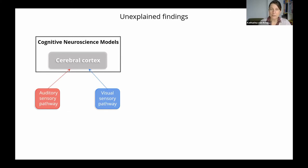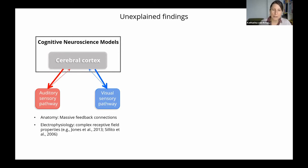But this view leaves several findings unexplained. So we know for a long time that there are massive feedback connections from the cerebral cortex to the sensory pathway nuclei, and we know that these sensory pathway nuclei have complex receptive field properties that can change over time. So why should such a system not be used to analyze speech, which is one of the most complex and most dynamic stimuli that the brain has to analyze. And this is especially interesting because for a long time we know that there are post-mortem histological alterations of sensory thalamus in developmental dyslexia, which is a disorder that has difficulties in perceiving speech sounds.